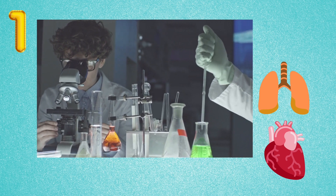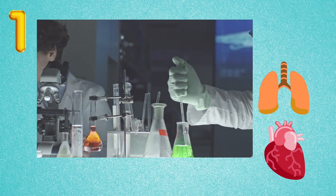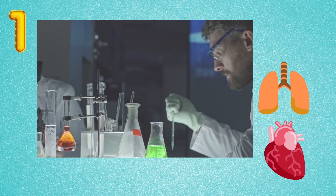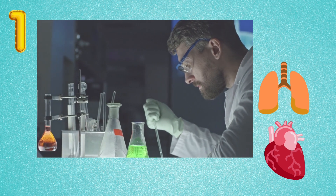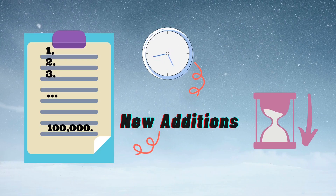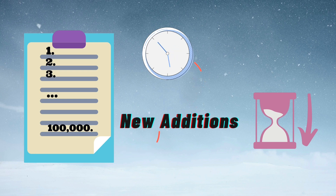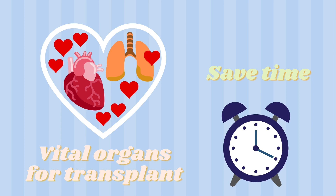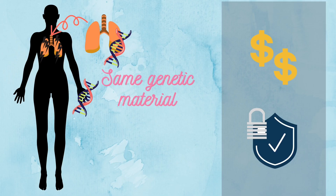First, therapeutic cloning can create organs. According to americantransplantfoundation.org, over a hundred thousand people are on the wait list for organ transplants which can save their lives, and every 10 minutes a new name is added to the national waiting list. Furthermore, 20 people die on average each day due to the lack of organs for transplant.